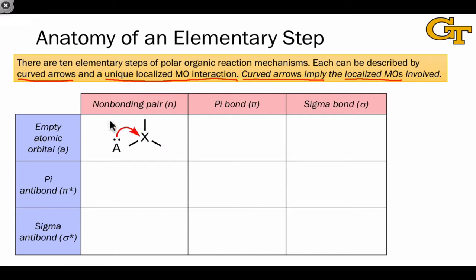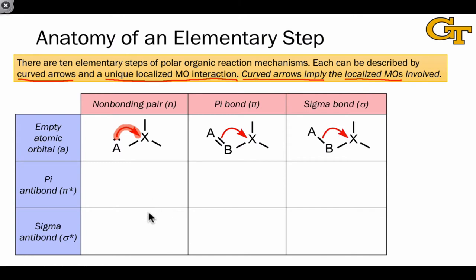When a non-bonding lone pair overlaps with an empty atomic orbital, electron flow always starts at a lone pair and terminates at an atom with only six total electrons around it. In all three of the examples on this row, we see that same building block appearing — the six-electron building block — since an empty atomic orbital is involved as the electron acceptor in all three cases. These differ in the nature of the source electrons, with a lone pair serving as the source in this first case, and a pi bond serving as the source in this case.